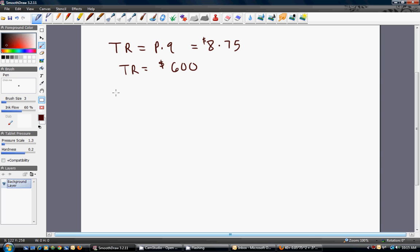For total cost, we take the total cost equation, and we're going to evaluate that total cost equation at the number of units of output the firm's producing, 75. In this case, we get total cost equals $358.75.